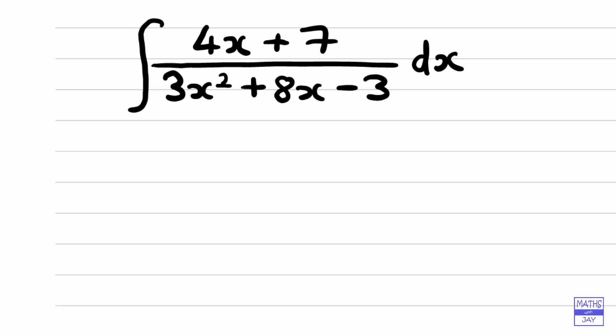But what we can do is factorise the denominator, and then that means that we can use partial fractions. So let's just look at the fraction and factorise the denominator. Just writing out the fraction and replacing the denominator by its factors. So we've got 3x and x to give us the 3x squared, and we must have 1 and 3 to give us the 3, one of them must be a negative, and it works out that we've got 3x minus 1 and x plus 3.